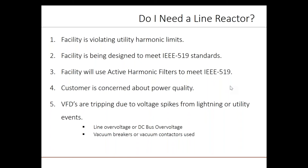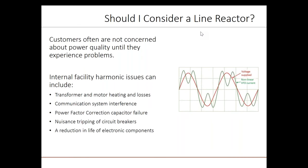Lastly, VFDs can experience tripping events, which are sometimes the result of voltage spikes from the upstream power system. This will show up as line or DC bus over-voltage faults. While line reactors are often associated with reducing current harmonics, another very important benefit is their ability to mitigate transient voltage disturbances. Vacuum breakers or vacuum contactors can cause large transient voltage spikes. Switching power factor correction capacitors can also cause voltage spikes, and so can lightning. A line reactor will help to limit voltage spikes. Customers are often not concerned about power quality until they experience problems. If any of these problems are occurring within a facility, it may indicate excessive harmonics, and line reactors should be one of the first solutions considered, especially if VFDs represent a major portion of the plant load.